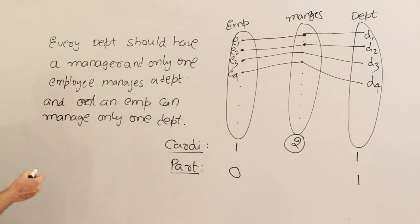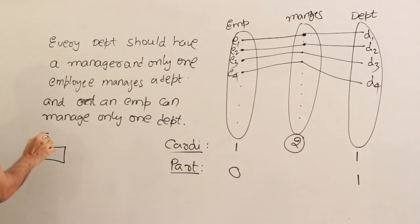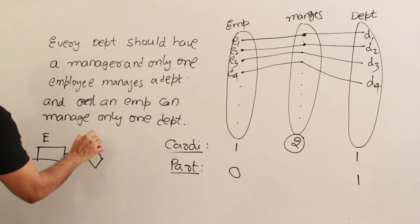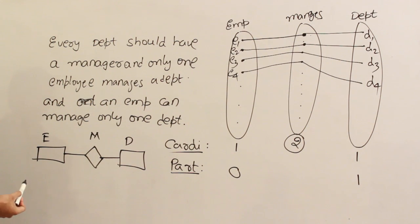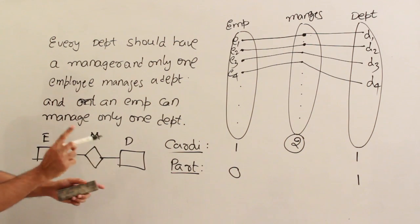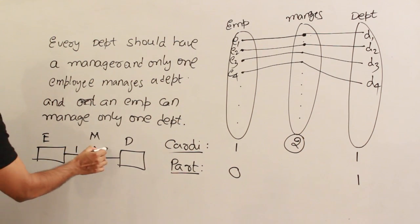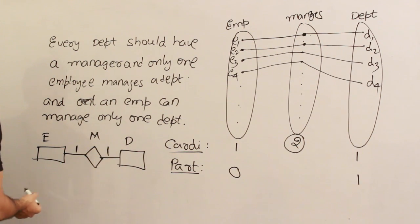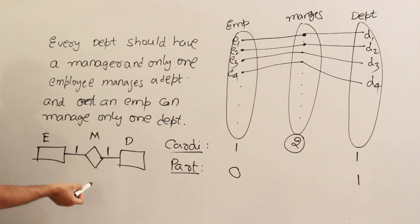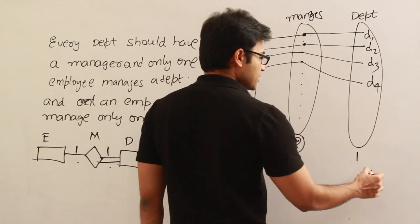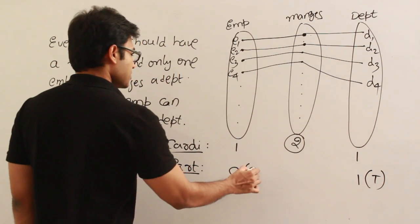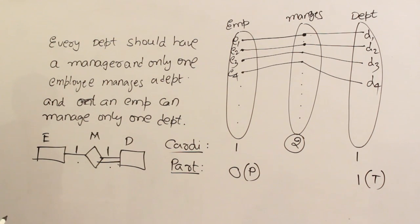Let's see how to represent this in both ways. One way is the single-line and double-line representation. This is employee, this is the 'manages' relationship, and this is department. To write the cardinality ratio, you reverse the actual number and write it. It is a one-to-one relationship — maximum cardinality is one and one. Department has total participation (double line), and employee has partial participation (single line).